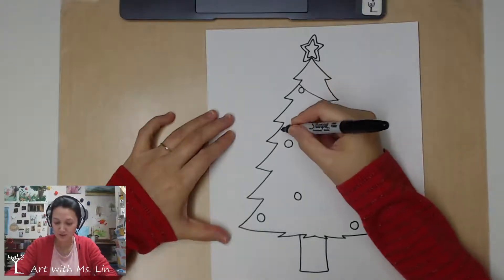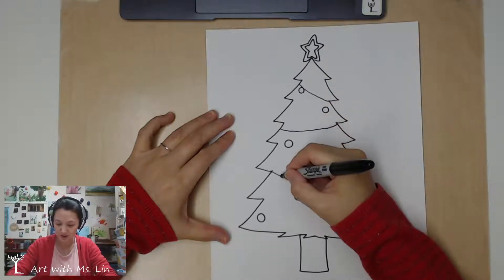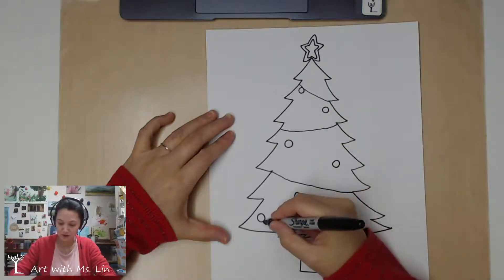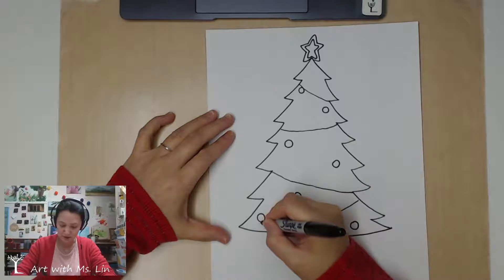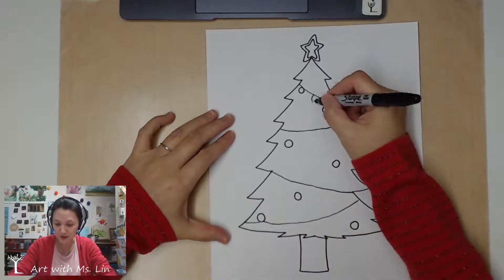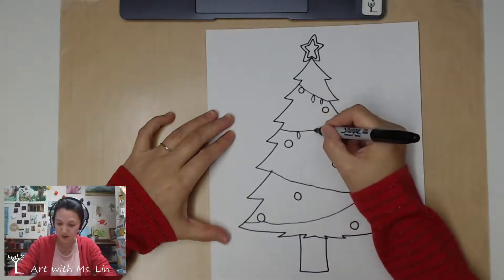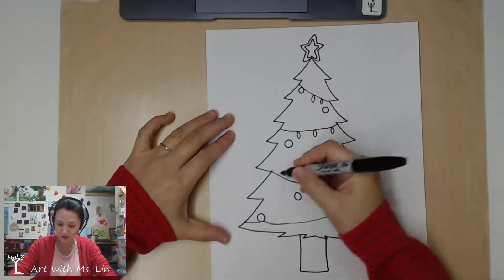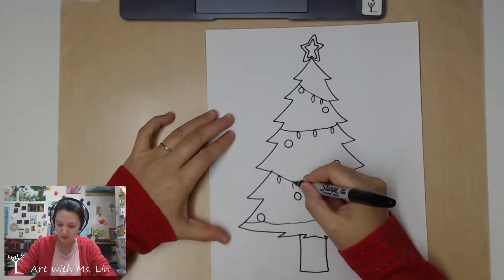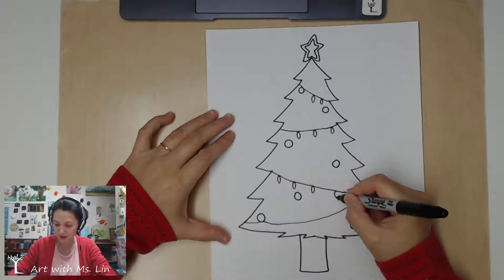You could have some wires kind of going from one side to another. You want to add like little lights. Different types of lights, circles, little circles, or a light bulb that's like a little pointy like this.